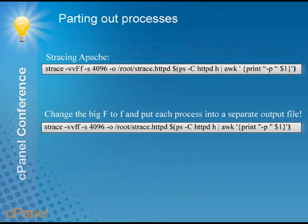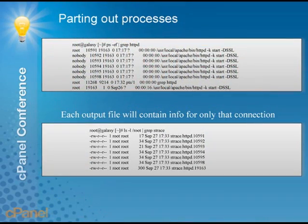Another tool you want to use when strace-ing Apache: we have an example command line for strace-ing Apache. It's a little more complex because you can have a lot of processes running. In that case, all you really need to do is change the capital F to a lowercase f, and what that causes is each httpd process to be put into a separate strace output file. This can be really handy on a very busy server. If you have a particular virtual host giving you problems, each httpd process is essentially for one connection, so by putting them all into their own files, you can grep for the domain name in question through those files and get just the process information relevant to your problem.